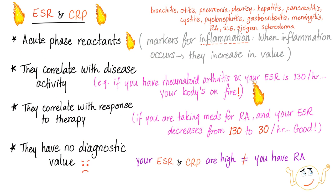ESR and CRP are called acute phase reactants — though technically ESR is a lab measurement, not something produced by the body. They correlate with disease activity. For instance, if you have rheumatoid arthritis and your ESR is 130 mm/hr, your body is on fire — the higher the ESR, the more disease activity. They also correlate with response to therapy: if ESR drops from 130 to 30 mm/hr with treatment, that means inflammation is decreasing and you are improving.